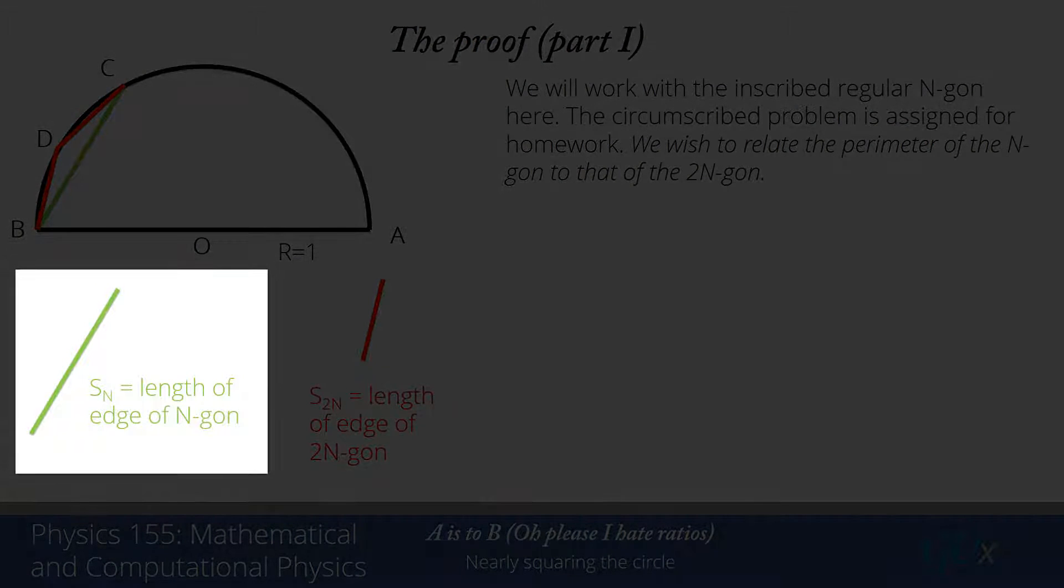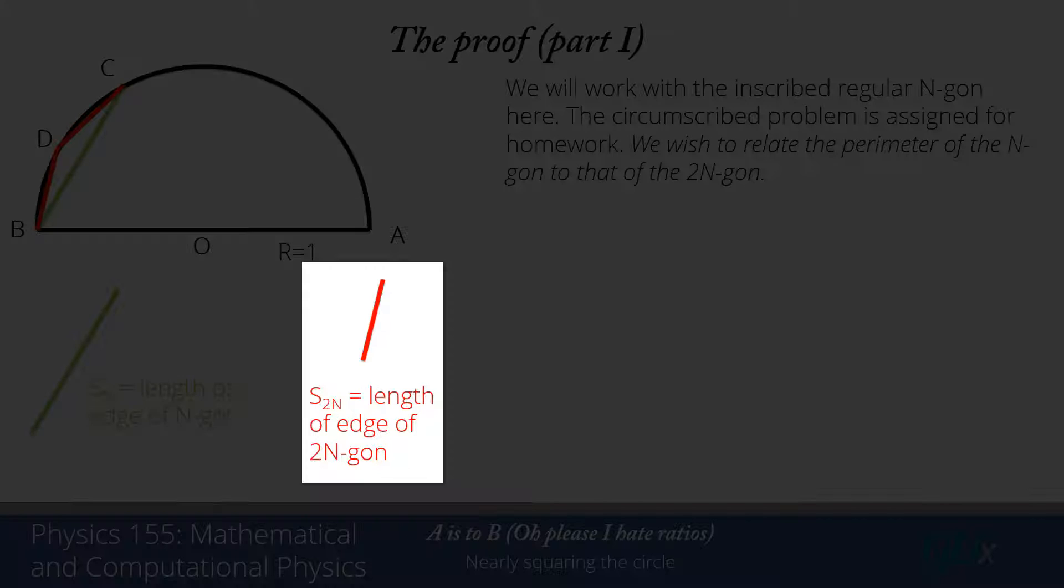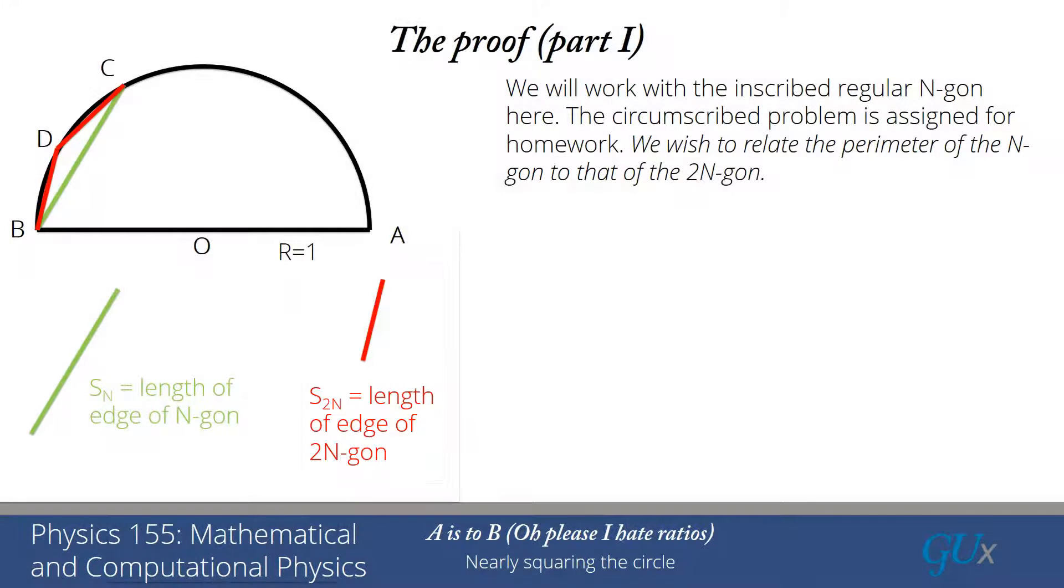Our goal is to relate the perimeter of the n-gon to that of the 2n-gon, and the way in which we do that is we have to relate the length of the edge of the n-gon, which is Sn, to the length of the edge of the 2n-gon, which is S2n. If we have that, we can get the respective perimeters, and then we can relate those to the calculation of 2 pi.